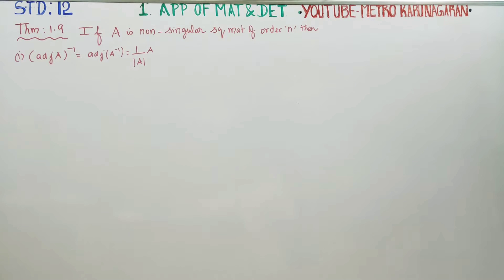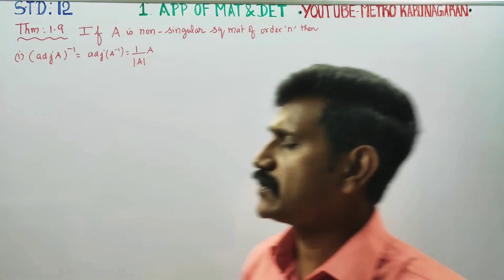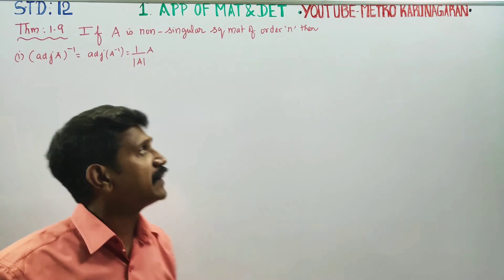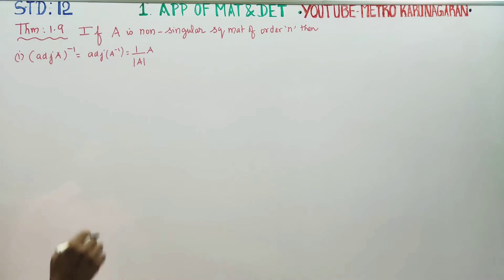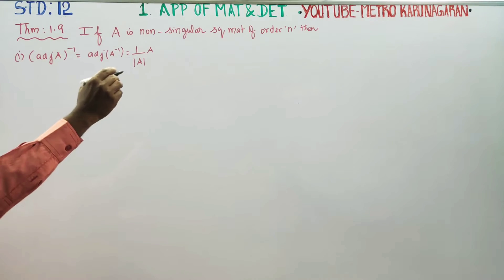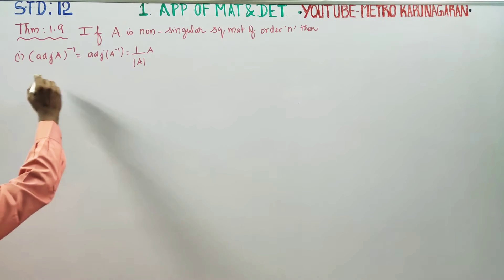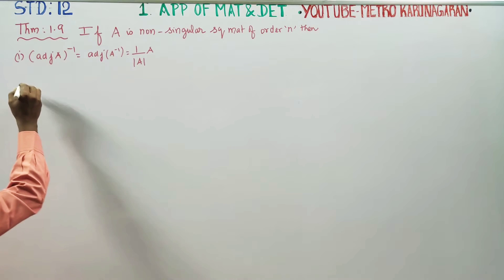Dear students, in Theorem 1.9, if A is a non-singular matrix of order n, then you have to prove the following.